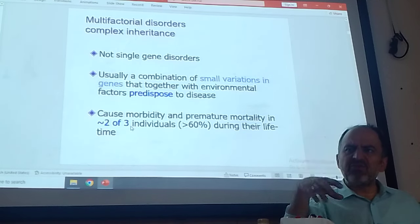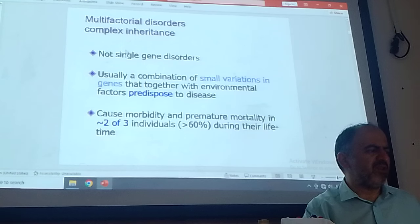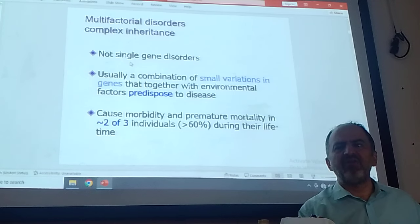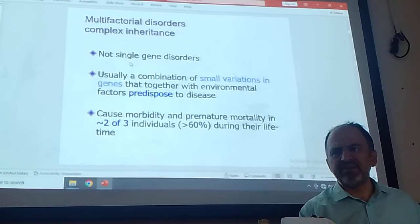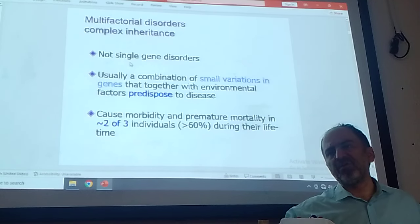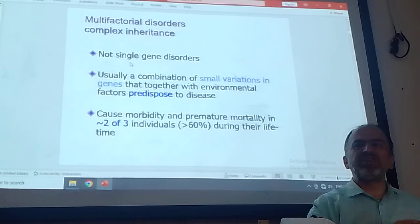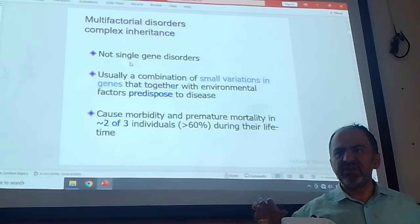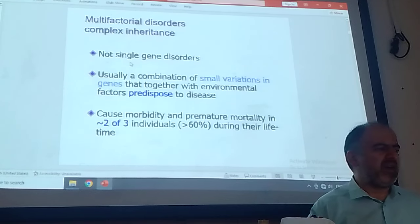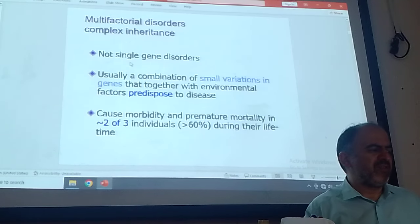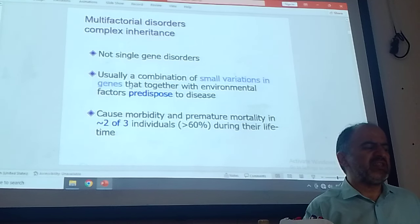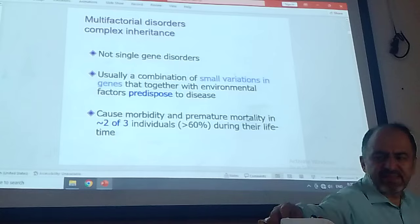So I will start to talk about how we understand the multifactorial disorder. It is not a single gene disorder. So if you hear 'a gene responsible for love was found' — that is a mistaken sentence. The correct sentence is 'one of the genes responsible for love was found,' or 'one of the genes responsible for being generous was found.' One gene is not enough to have a behavioral or multifactorial disorder. Usually a combination of small variations in genes together with environment can predispose to disease. What do we mean? We have something called SNPs.